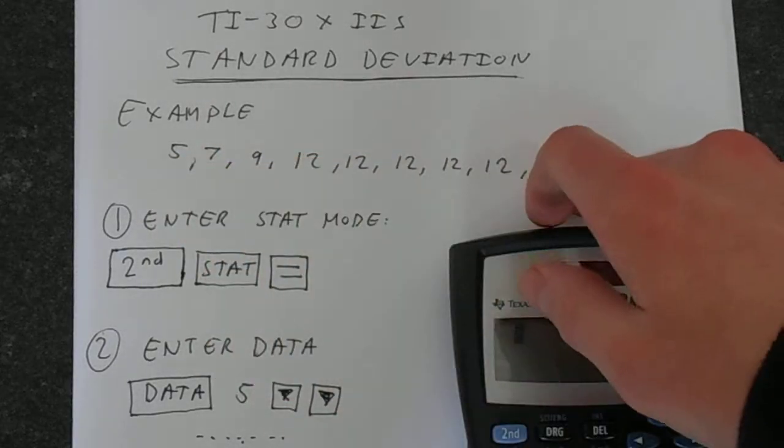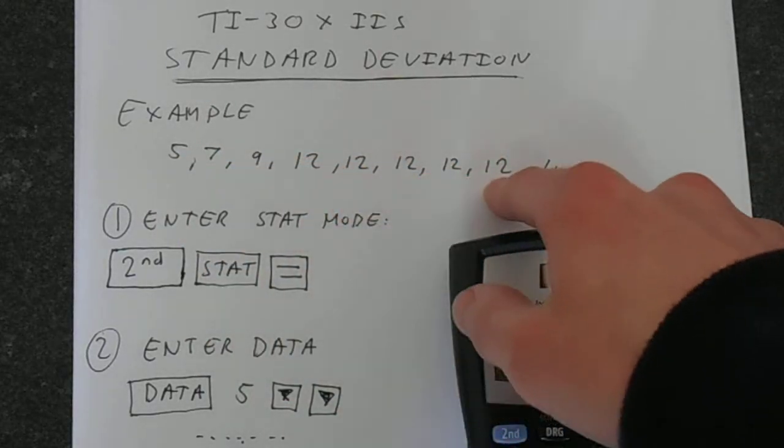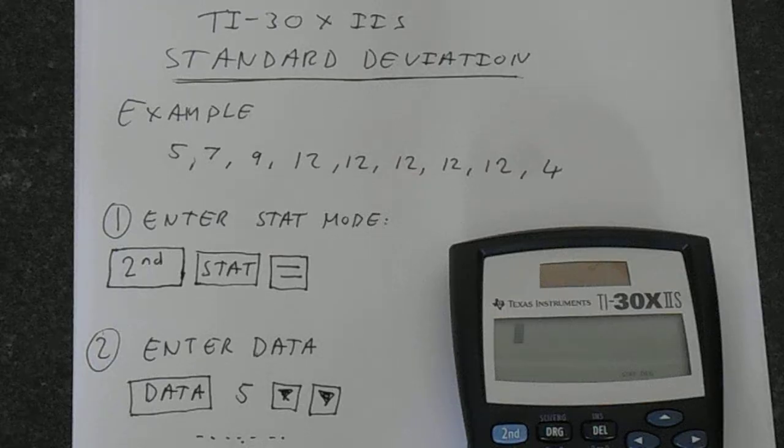I've got a set of data here. You'll notice that the 12s are repeated. So we're going to use the frequency function so we don't have to type 12 repeatedly. More efficient.